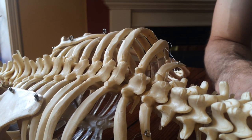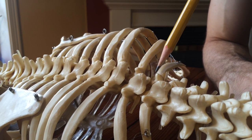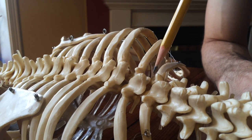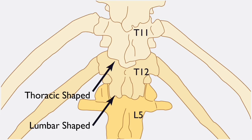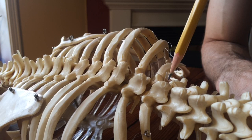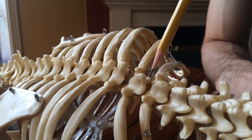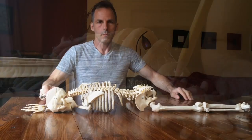The change happens right at T12, and this is a fascinating vertebra. The superior articular facet is shaped like a thoracic vertebra, while the inferior articular facet is shaped like a lumbar articular facet. So it's this incredible transition from superior where it's thoracic to inferior where it's lumbar.